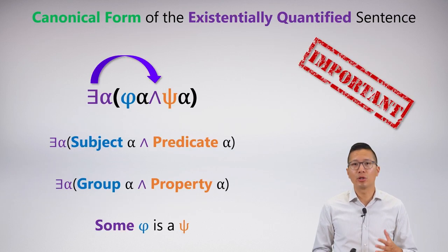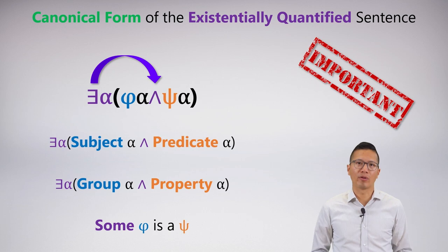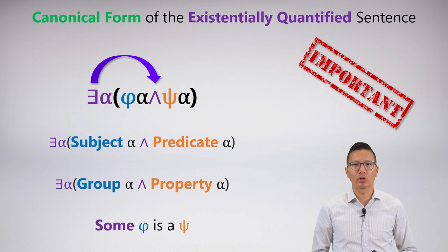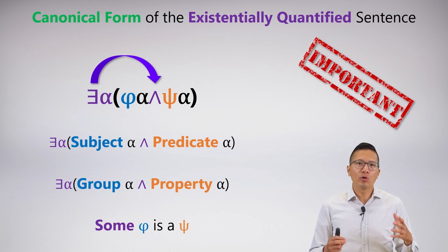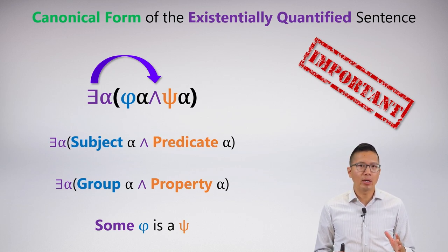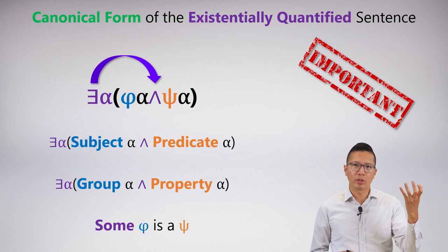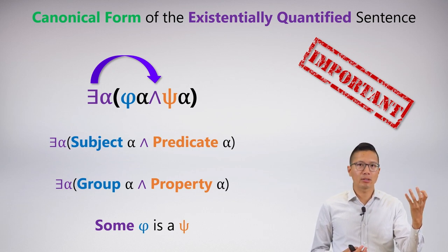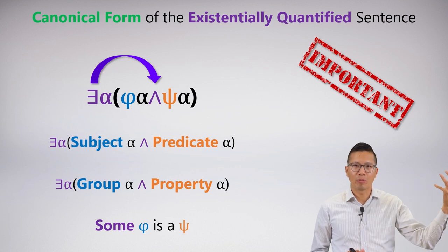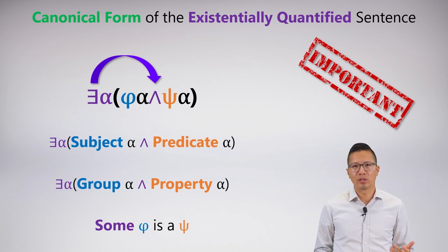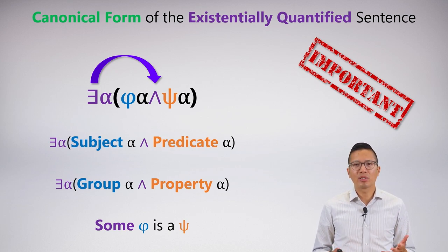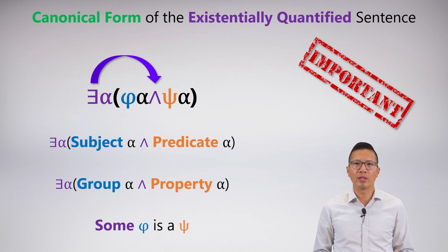This immediately leads to the canonical form of the existentially quantified sentence. Unlike the universal, we pair the existential with the conjunction — with 'and.' We use the existential, then put the group or subject, and then the conjunction followed by the property. So 'some φ is a ψ' is symbolized as 'there exists an x, φx and ψx.' This is the canonical form and the go-to way of symbolizing existential claims.